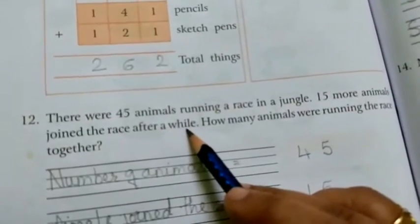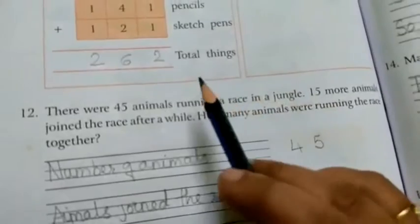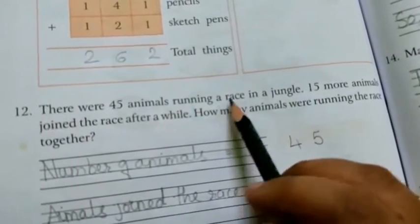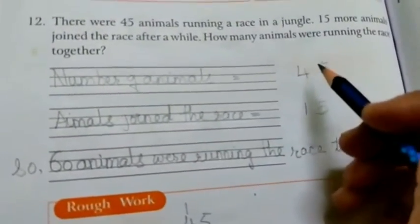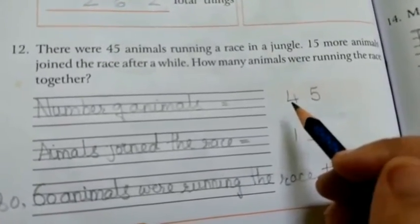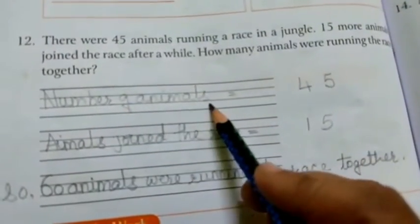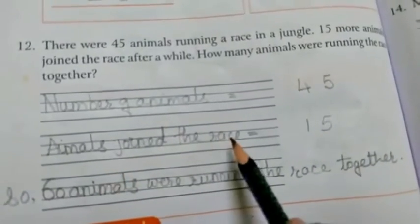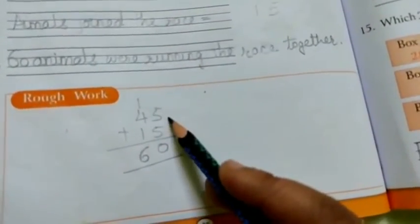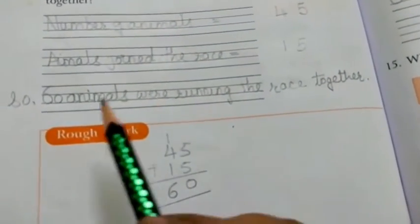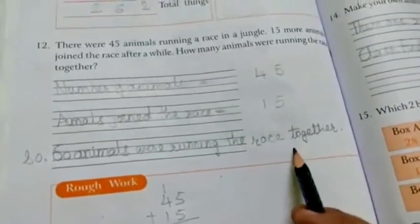Now 12th one. There were 45 animals running a race in a jungle. 15 more animals join the race after a while. How many animals were running the race together? 45 animals were running in the jungle, then 15 more animals join the race. So we have to find out the total. So for finding out the total what we have to do? We have to add both the numbers. So number of animals, 45 animals join the race, then 15. In the rough column we are going to add 45 plus 15, that is 60. So 60 animals were running the race together.